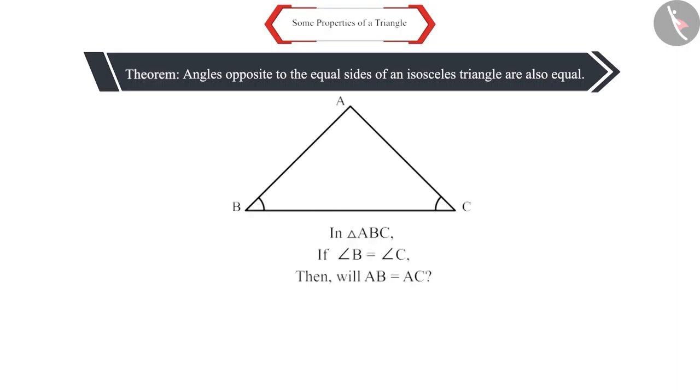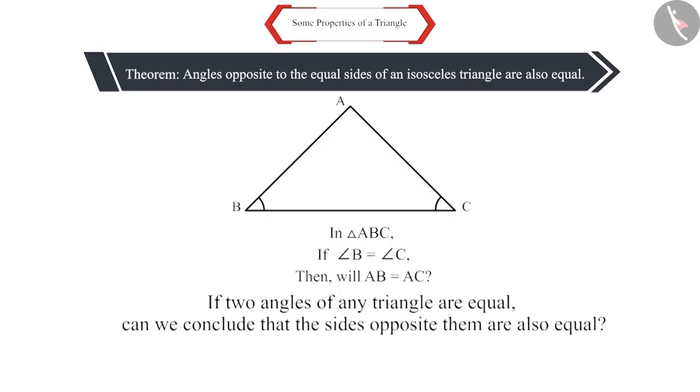Is the converse also true? So, if two angles of any triangle are equal, can we conclude that the sides opposite them are also equal? Let's see.